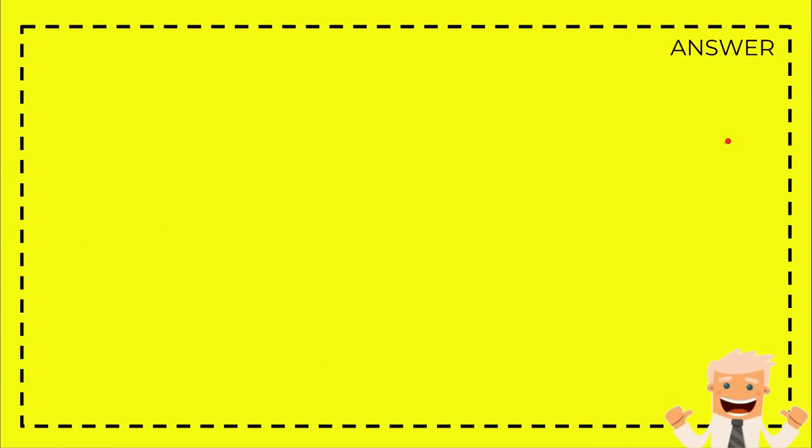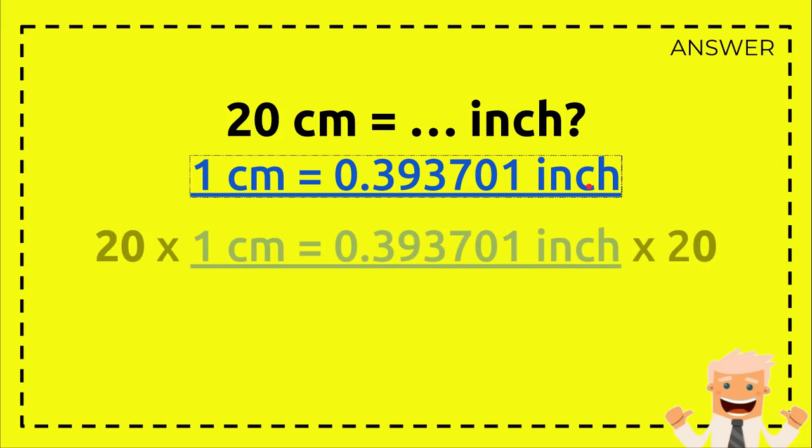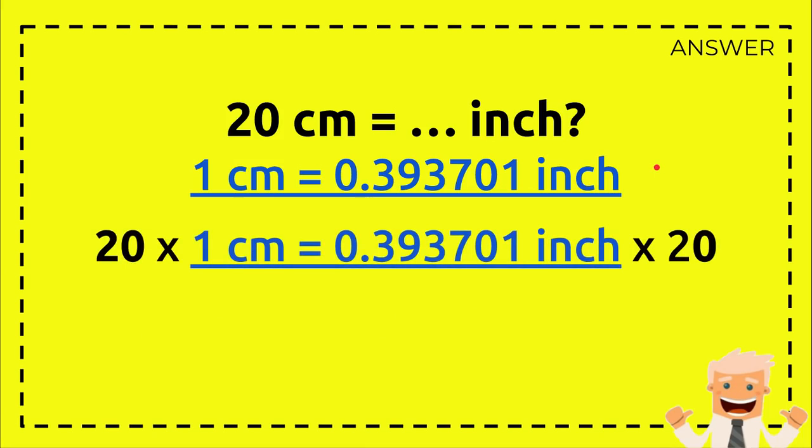We will solve. Alright, this is the answer section. Well, before we answer the question, we need to write the question again: 20 centimeters equals how many inches? And then we write the formula again: 1 centimeter equals 0.393701 inch.